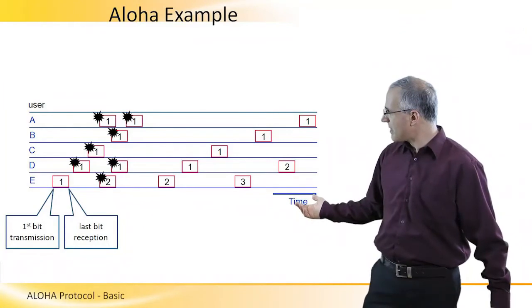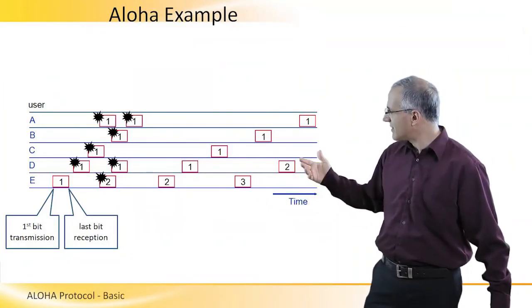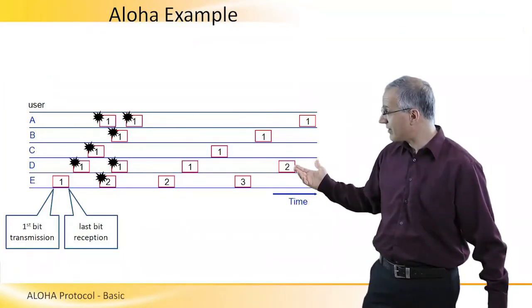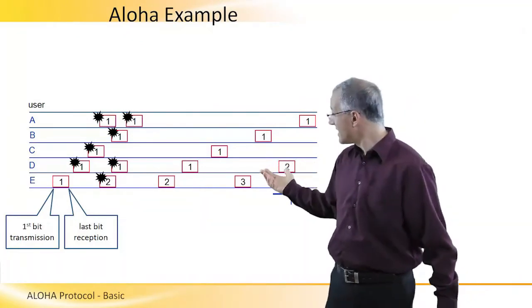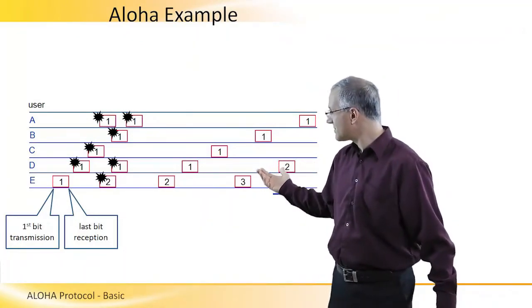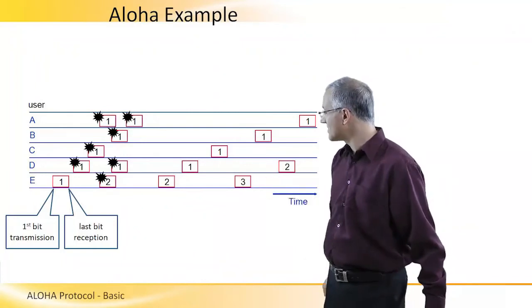However, bandwidth is not necessarily allocated fairly among the users, because as you can see here, user E managed to transmit three frames before user A managed to transmit even one.